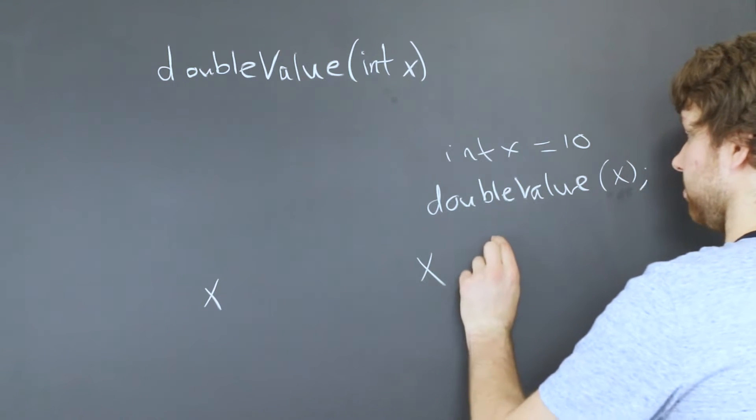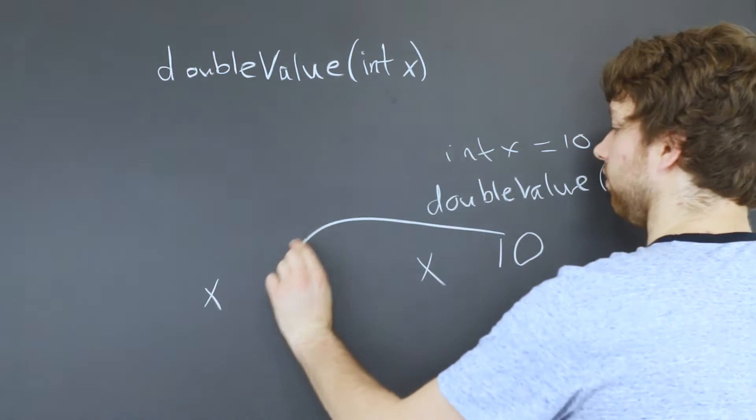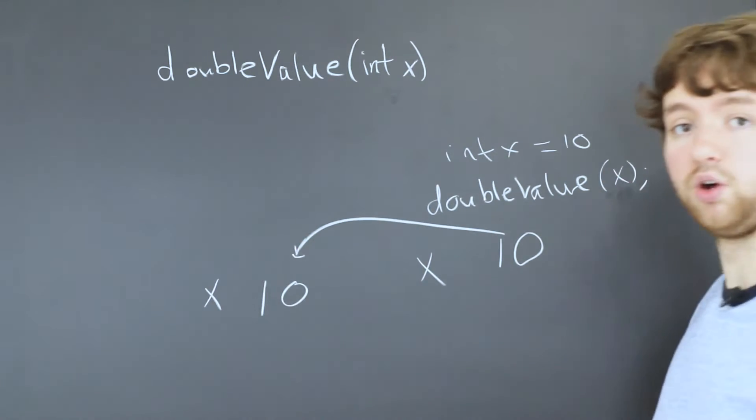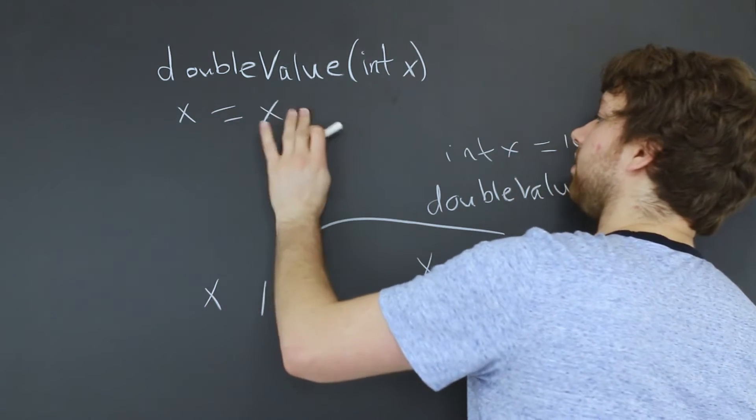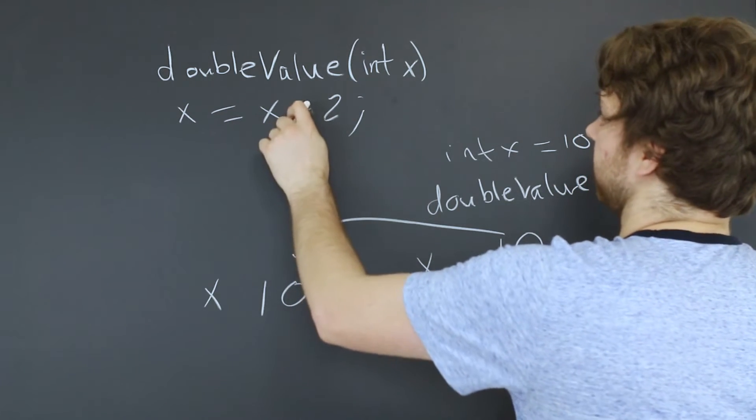And what happens is we have the value 10 here with x that gets copied over to this x and is given the value here. So in this code, if we do this, x equals x times 2. Sorry, it's kind of hard to draw an asterisk.